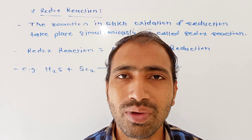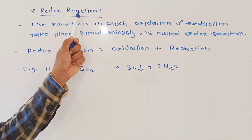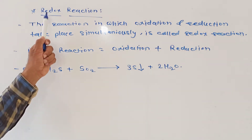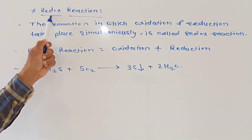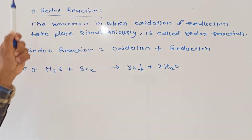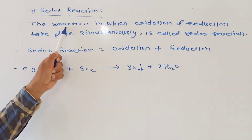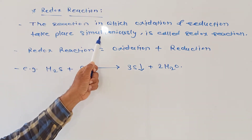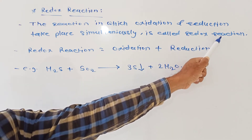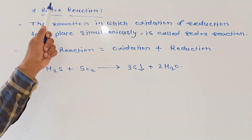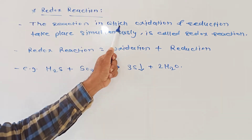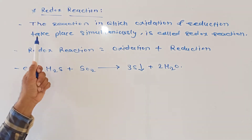Let us see the point present on page number 43, which is redox reaction. The definition of redox reaction: the reaction in which oxidation and reduction take place simultaneously is called redox reaction.